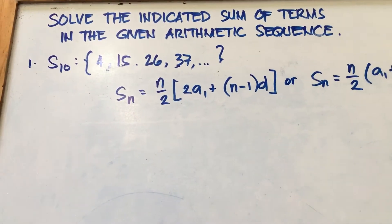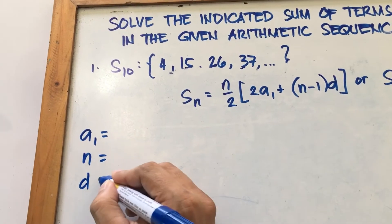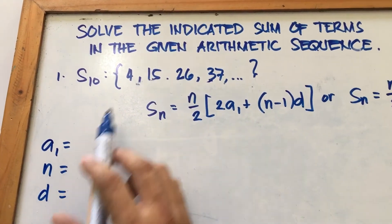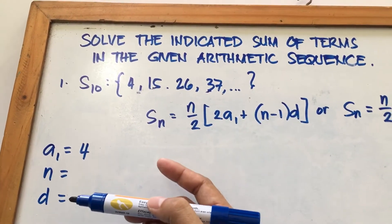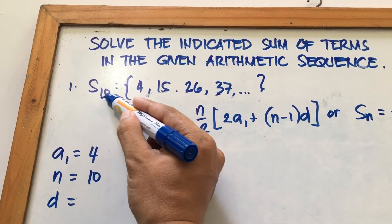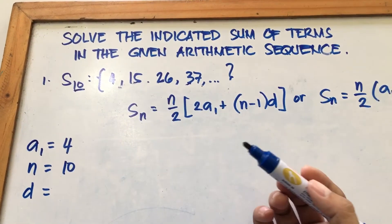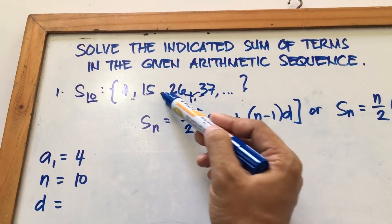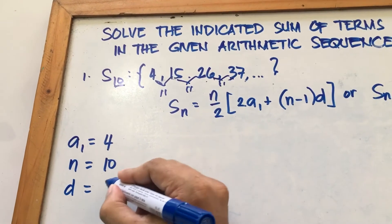One of the first steps in solving the arithmetic series is the same as with arithmetic sequence: find A sub 1, N, and D. A sub 1 is the first term of the given sequence, which is 4. Your N is the number of terms you add in the arithmetic series — how many terms you need to add to find the sum — that is 10, because the given is S sub 10. The D is the common difference. To find it, we subtract consecutive terms: 37 minus 26 equals 11, 26 minus 15 equals 11, 15 minus 4 also equals 11. So the common difference is 11.